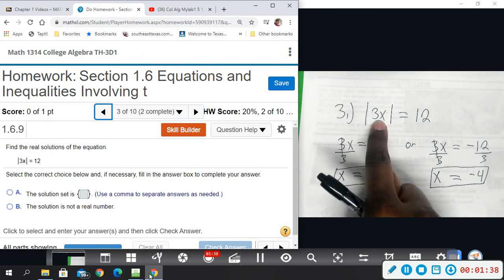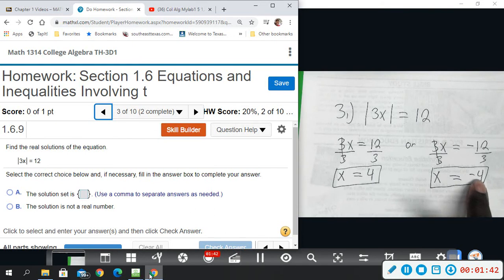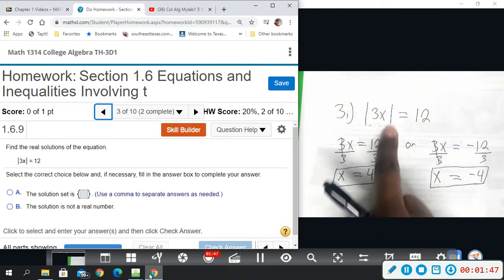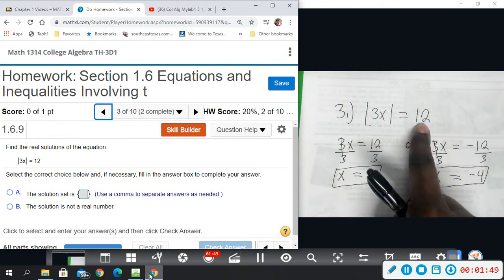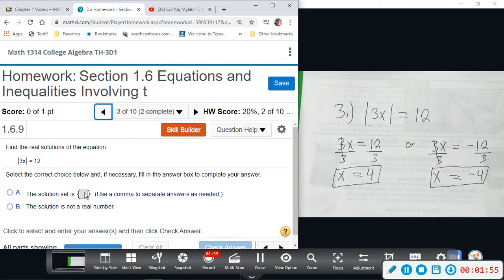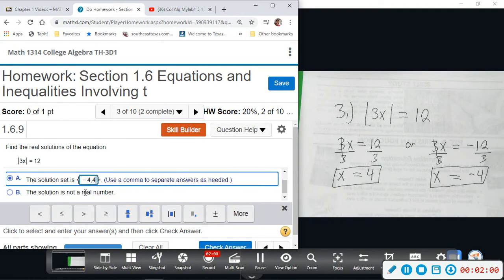So if you were to plug in and check, 3 times 4 is 12, absolute value of 12 is 12. And if you plug in negative 4, 3 times negative 4 is negative 12, but when you do absolute value of negative 12, it comes out positive as well. So both of these are real number solutions for number 3. So we will say negative 4 and 4.